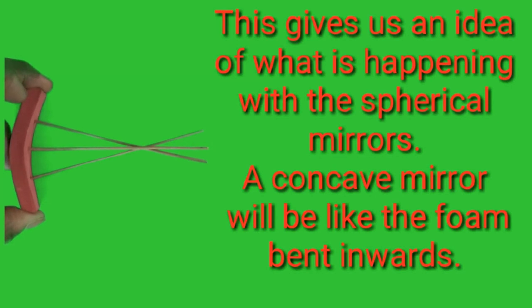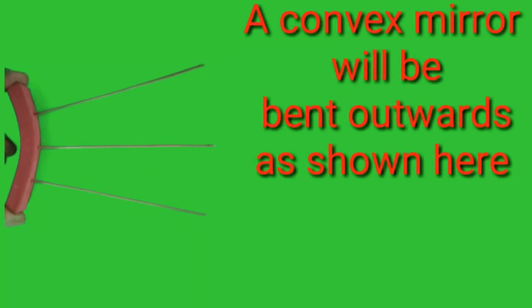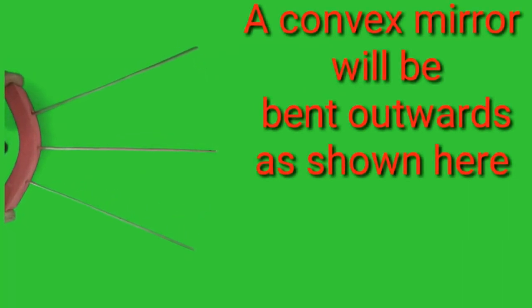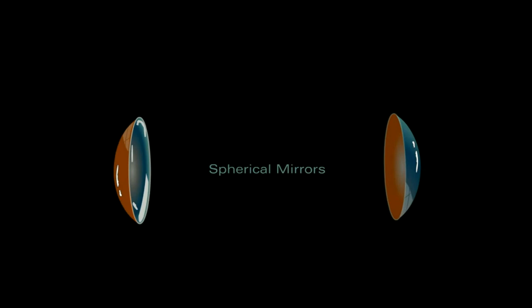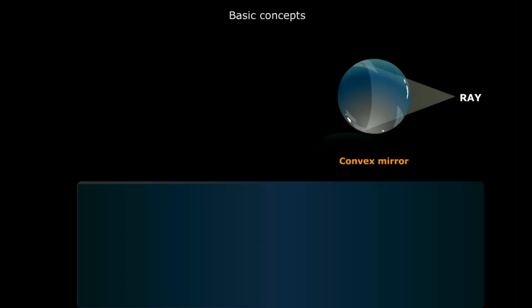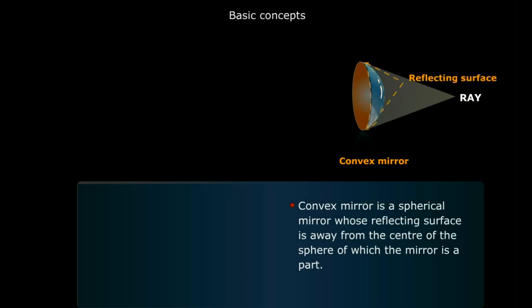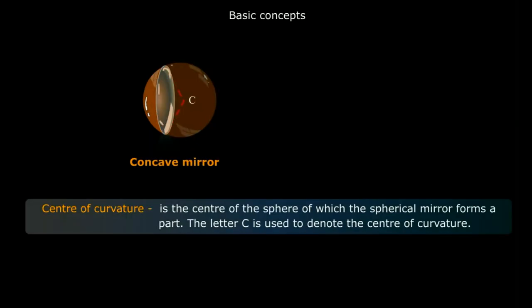This gives us an idea of what is happening with the spherical mirrors. A concave mirror will be like the foam bent inwards, and a convex mirror will be bent outwards. Now let us know the basic concepts of the spherical mirrors. A concave mirror is a spherical mirror whose reflecting surface is towards the center of the sphere of which the mirror is a part. A convex mirror is a spherical mirror whose reflecting surface is away from the center of the sphere of which the mirror is a part. Concave mirror is inside-reflecting and convex mirror is outside-reflecting.